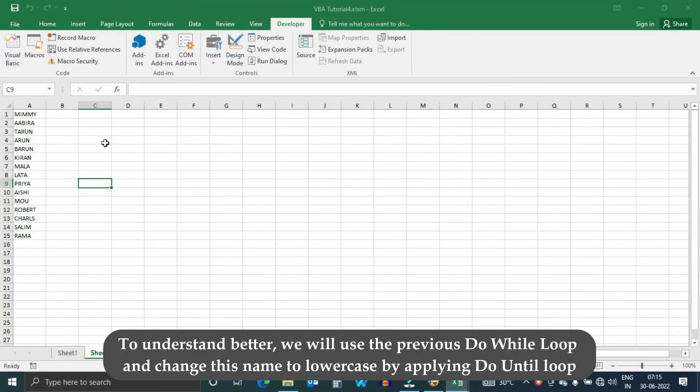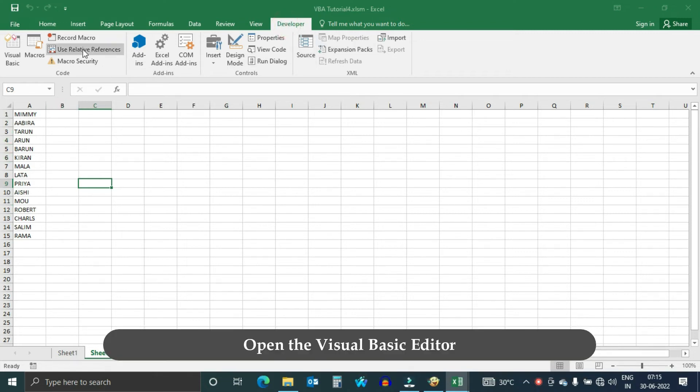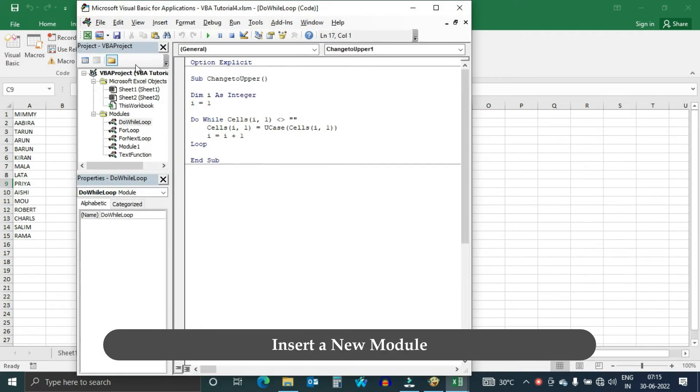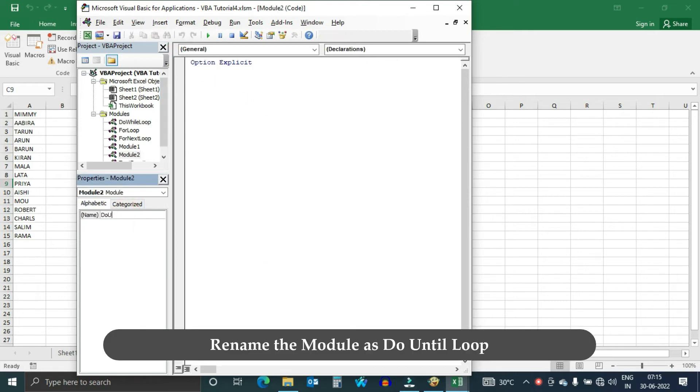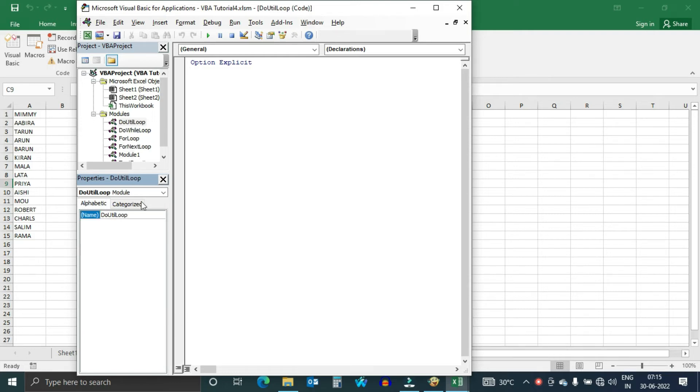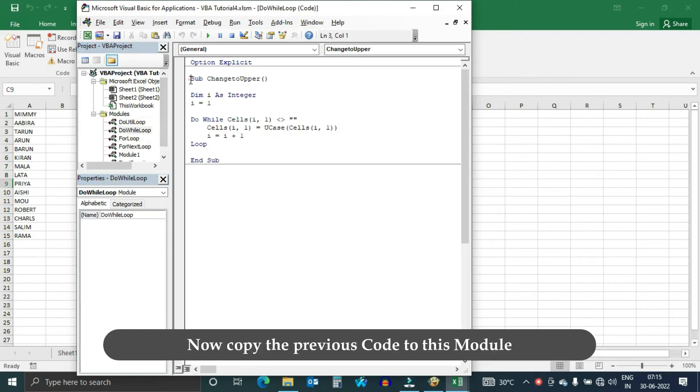To understand better, we will use the previous code of Do While loop and change these names to lowercase by applying Do Until loop. Open the Visual Basic editor. Insert a new module. Rename the module as Do Until loop. Now copy the previous code to this module.